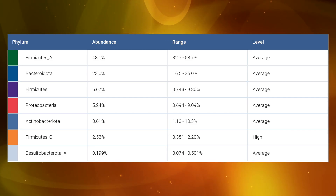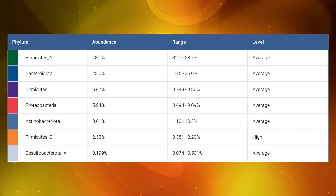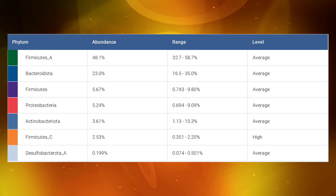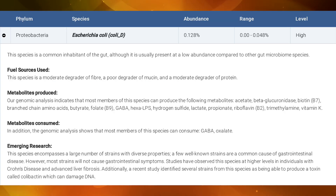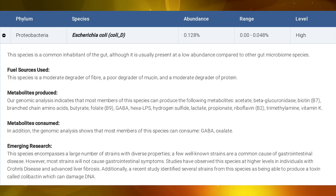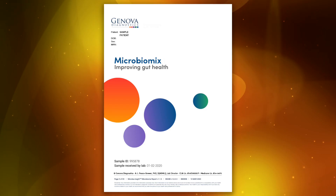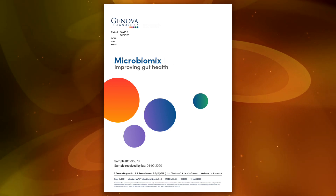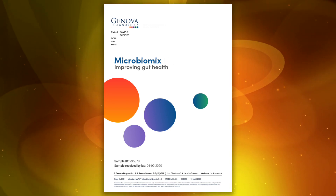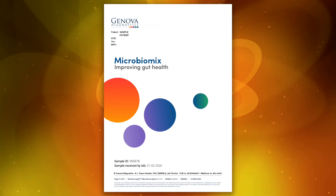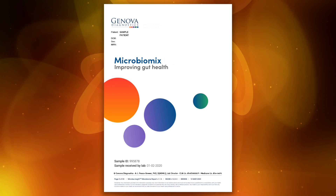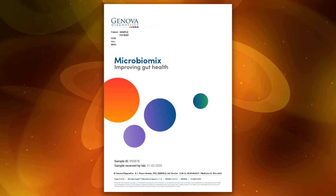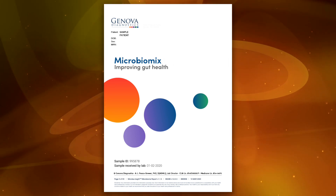A phylum is the highest level of grouping comprising hundreds to thousands of species. You'll also see a detailed list of the species profiles that are found in your microbiome. The Microbiomics report is a comprehensive report detailing key information about your personal gut microbiome — a whole microscopic world is yours to unlock.